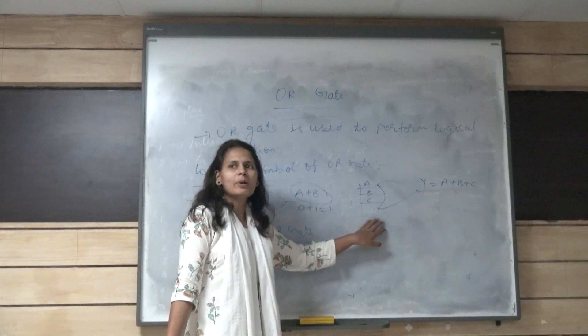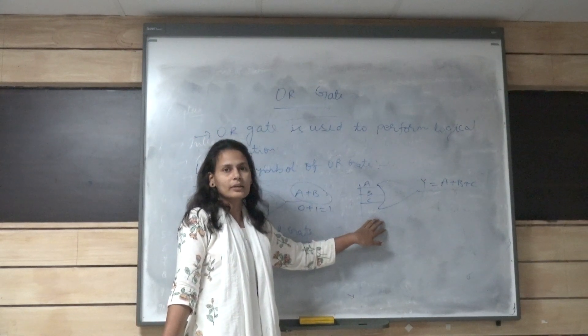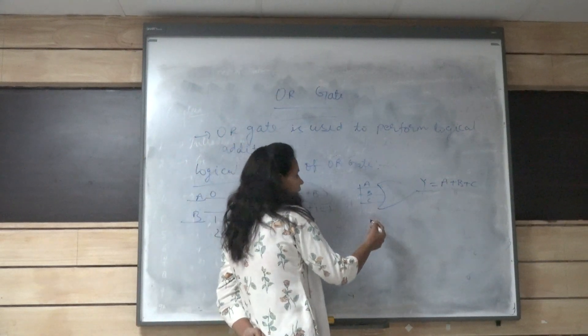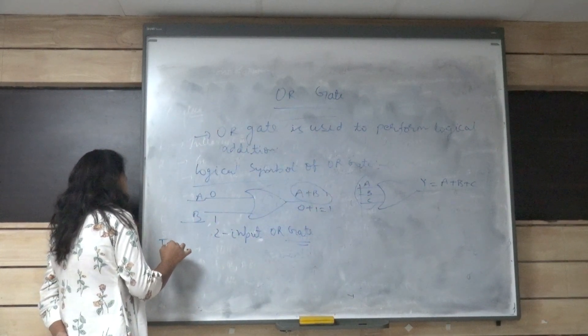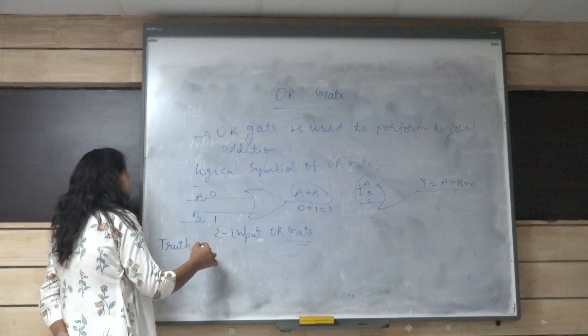This is the logical symbol of three input OR gate. Now, we will draw the truth table of two input OR gate.